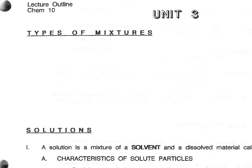In Unit 1, we did a lot of talking about pure substances. Now we're going to talk about mixtures. There are three major types of mixtures. First, you already know the heterogeneous mixtures.